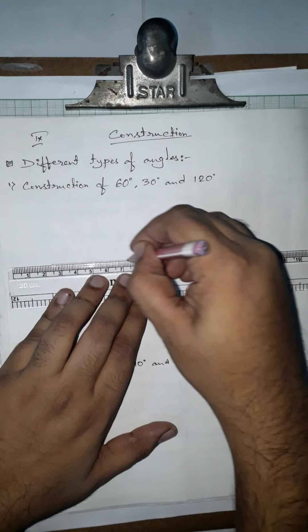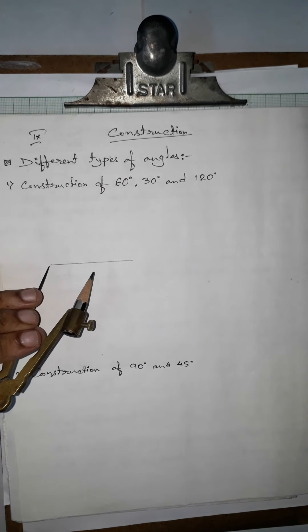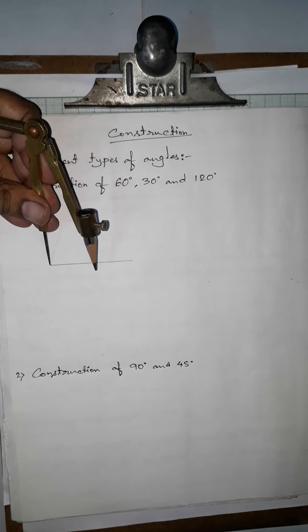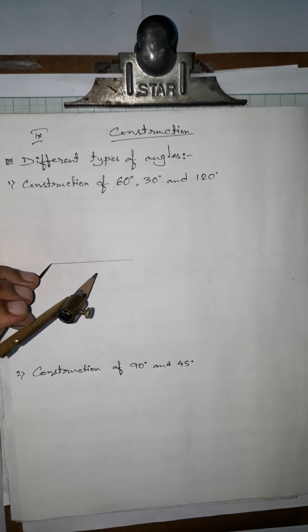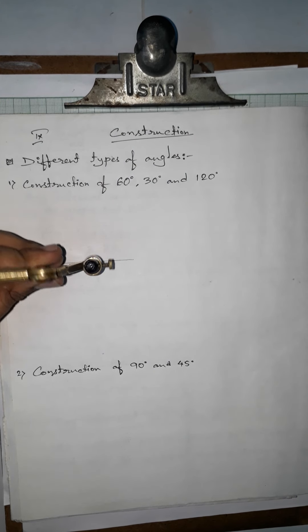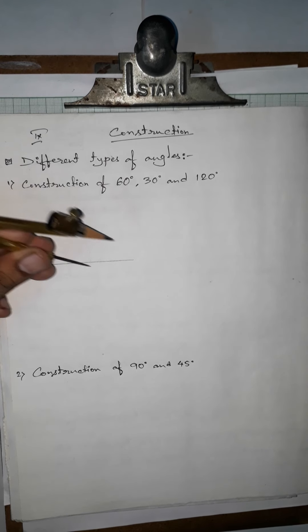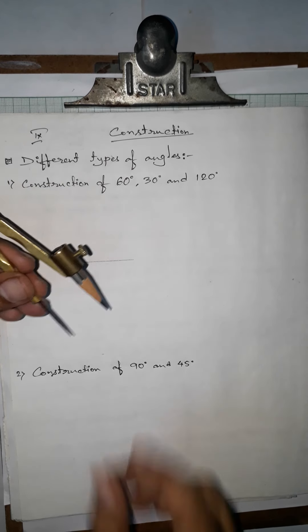This line will be the base for the 60-degree angle. From any one of the endpoints — either right or left — we take a chosen radius and draw an arc. We will give an arc from one of the endpoints, and we will get an intersection point.